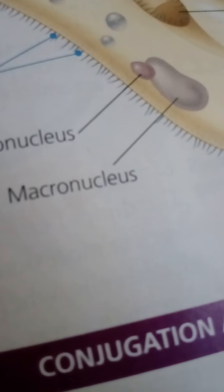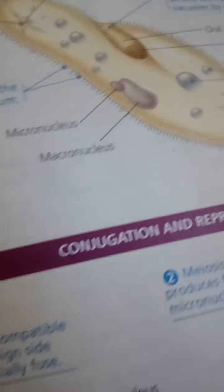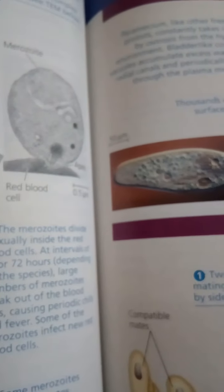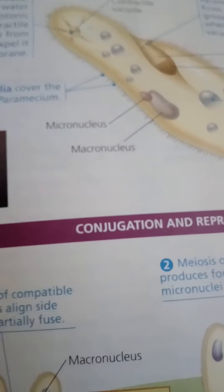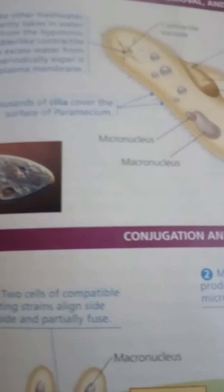Ciliates are a large, varied group of protests named for their use of cilia to move and feed. The cilia may completely cover the cell surface or may be clustered in a few rows or tufts. In certain species such as Stentor, rows of tightly packed cilia function collectively. Other ciliates carry leg-like structures made from many cilia bonded together. A sub-membrane system of microtubules coordinates ciliary movements.